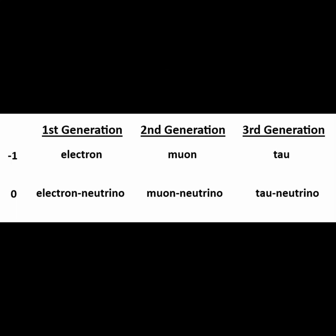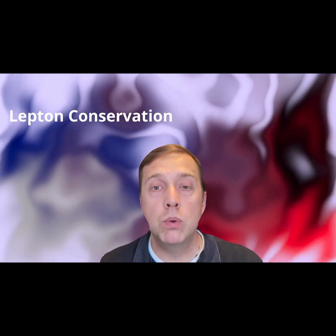If two leptons come close enough to experience the weak force, there's a possibility that they can be changed into other leptons. It is only possible to change leptons within the same generation into each other — electron to electron neutrino and vice versa, but not into muon or muon neutrino. The weak force acts within lepton generations, not between them.